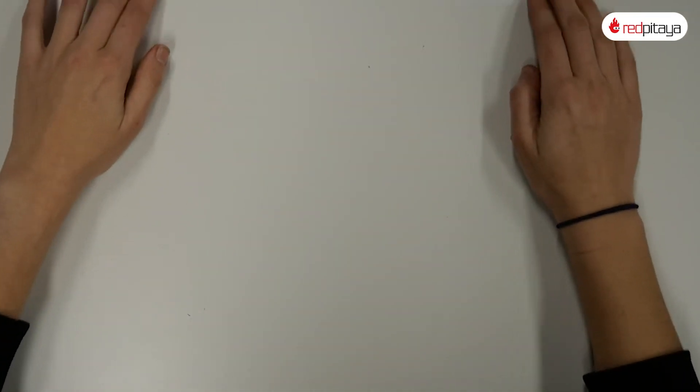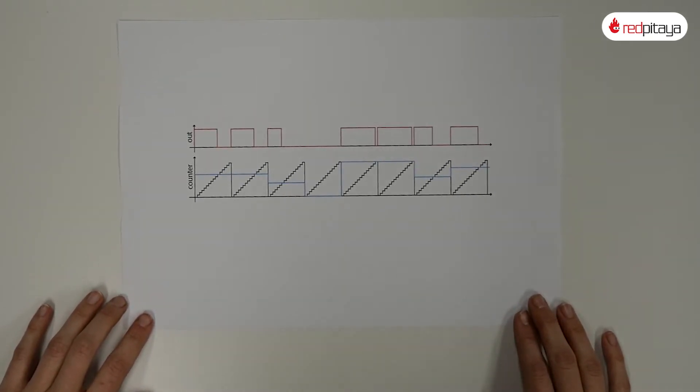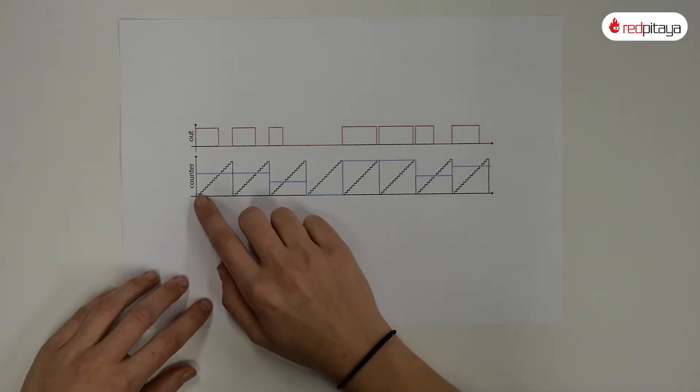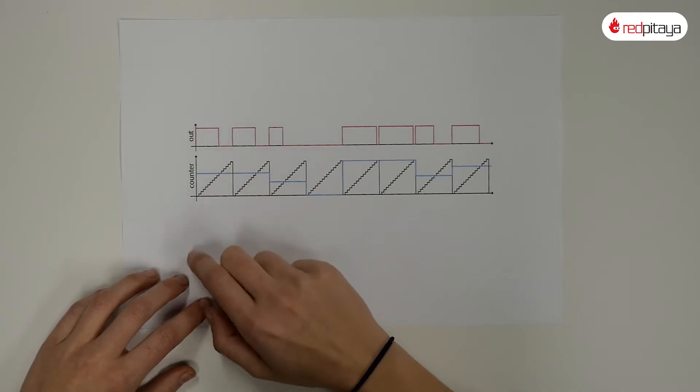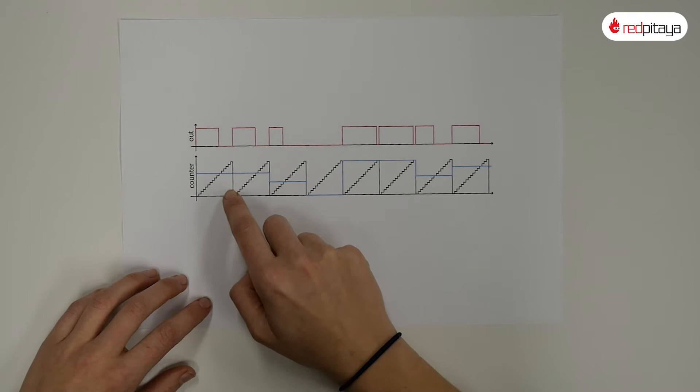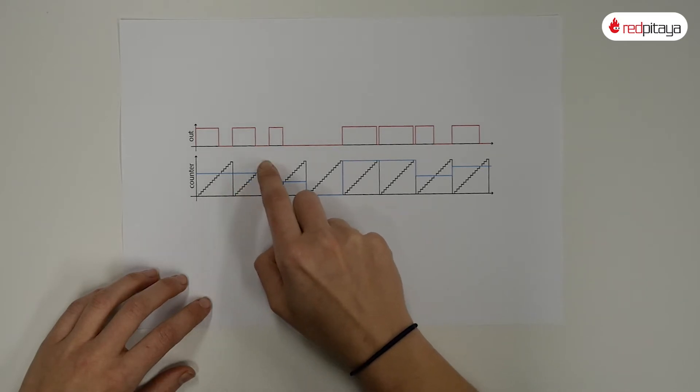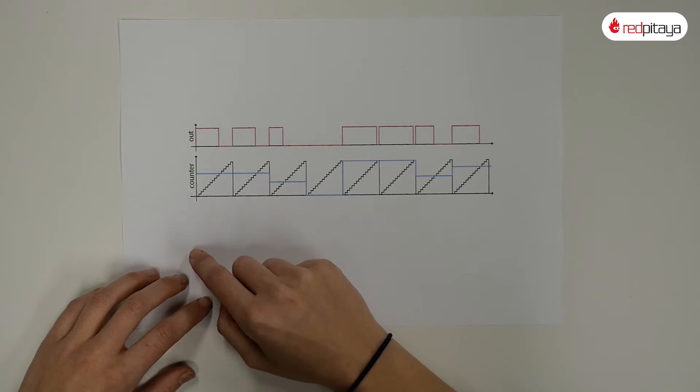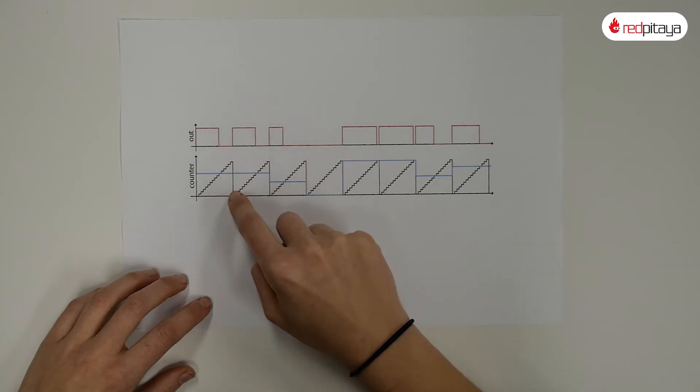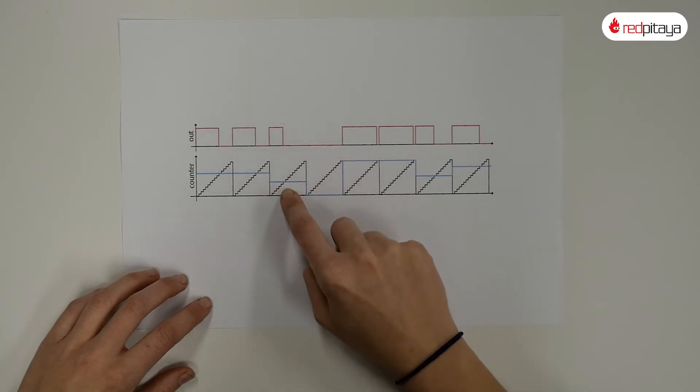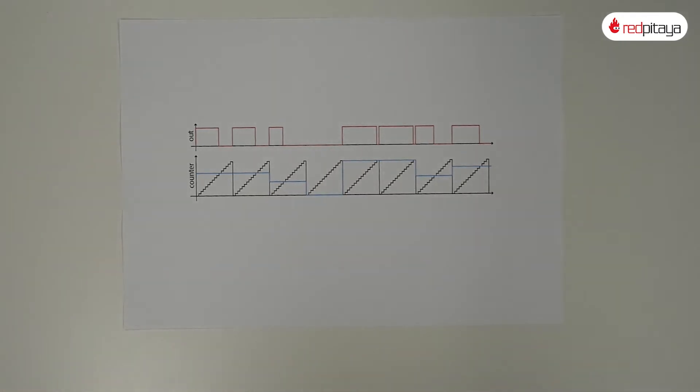We should discuss how PWM signal is generated first. In digital PWM we have a counter that increments by one on each clock cycle. When the counter overflows it resets to zero and continues counting upwards. At the same time the output of the PWM is set high. When the counter reaches the threshold value, output is set to low. That is how Red Pitaya generates PWM.